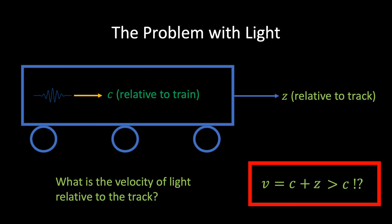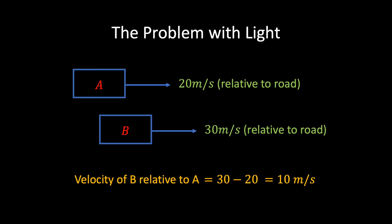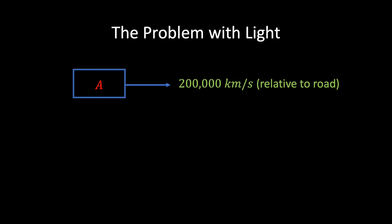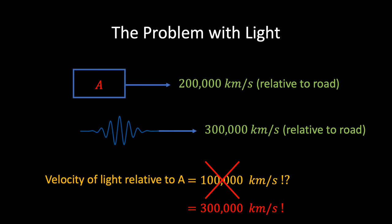To make this point differently: if you are in a car travelling at 20 m/s and another car travels past at 30 m/s relative to the road, the second car's speed relative to you is simply 10 m/s. Then surely, if a spaceship is travelling at 200,000 km/s and a beam of light passes at 300,000 km/s relative to the road, the speed of light relative to the spaceship should be 100,000 km/s. But if you actually do the experiment, this is not what you find. The light appears to travel at 300,000 km/s relative to both the spaceship and the road. So how can both statements be true?